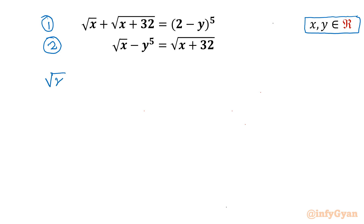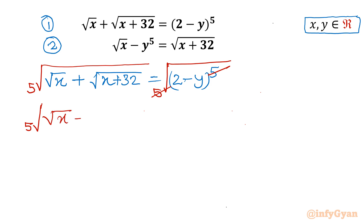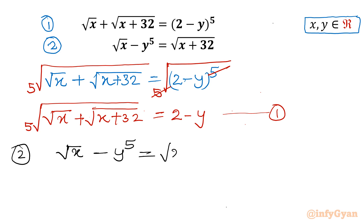Let us write equation number 1: square root x plus square root of x plus 32, equal to 2 minus y raised to the power 5. Now I will take fifth root of both sides, so the power 5 and fifth root will cancel. This leaves us with: fifth root of square root x plus square root of x plus 32, equal to 2 minus y. For equation 2, I will move y power 5 to the RHS: square root x minus y power 5, equal to square root of x plus 32.